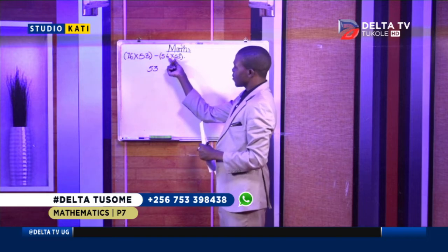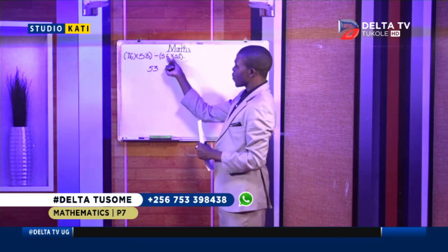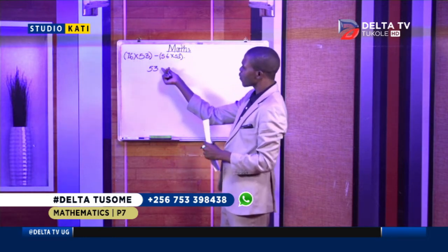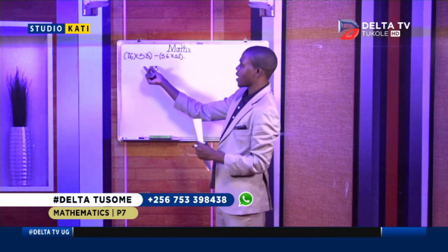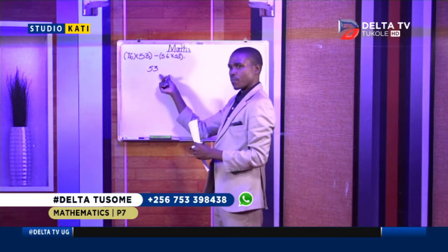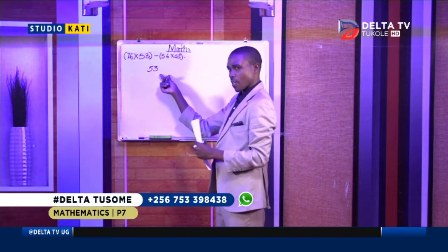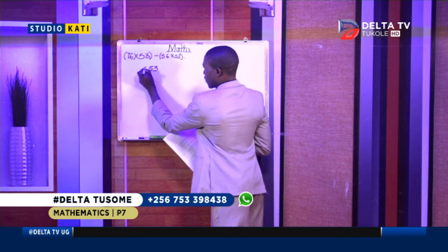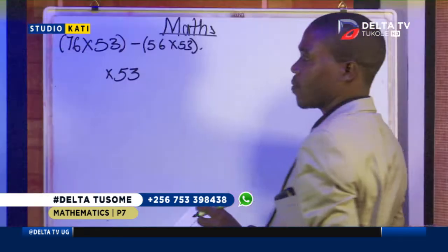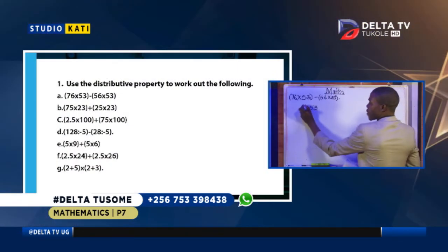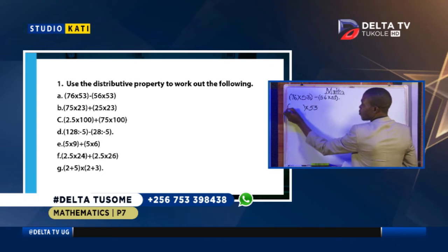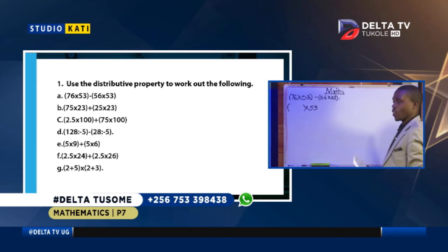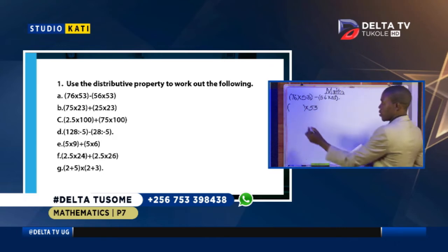Take an observation: this operation used — is it in front or behind of 53? It is behind. So we shall put it behind. And so now the remaining values we shall put them in a bracket.